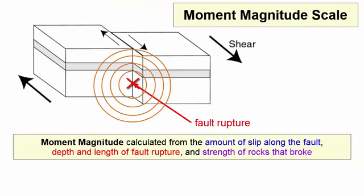As a result, the Moment Magnitude Scale was developed and is the one now used by seismologists around the world. The Moment Magnitude Scale calculates magnitude from amount of slip along the fault, depth and length of fault rupture and strength of rocks that broke. With this new scale, a magnitude 7.1 from one location represents the same energy release as another location. However, it does take time to gather the data necessary to calculate the Moment Magnitude.